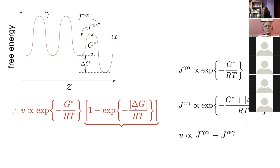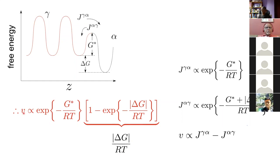This is a physically derived equation which ought to work for any magnitude of the driving force. But looking at the mathematics, when ΔG is small the expression reduces to |ΔG|/RT, and we recover the direct proportionality between velocity and driving force. So you can substitute values of ΔG to see what deviation arises between the linear approximation and the full equation. This illustrates that you need to be careful when looking at very large forces.